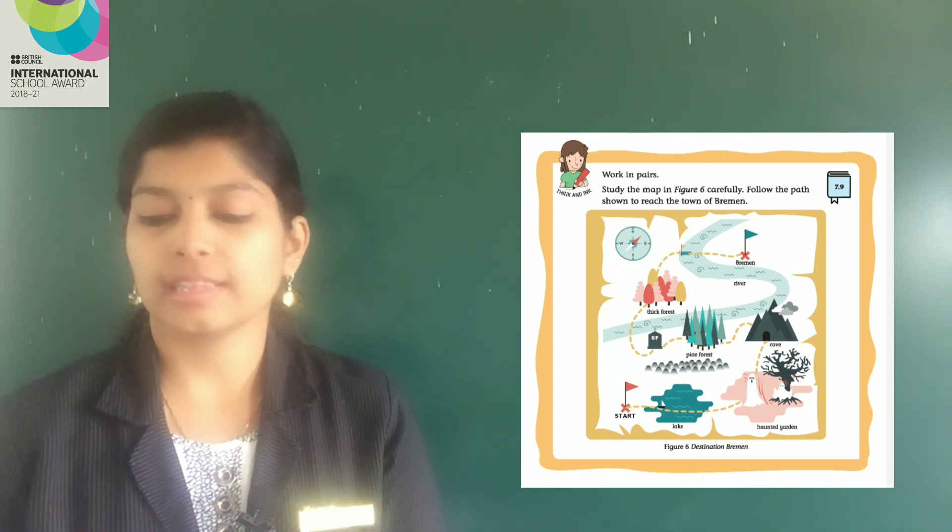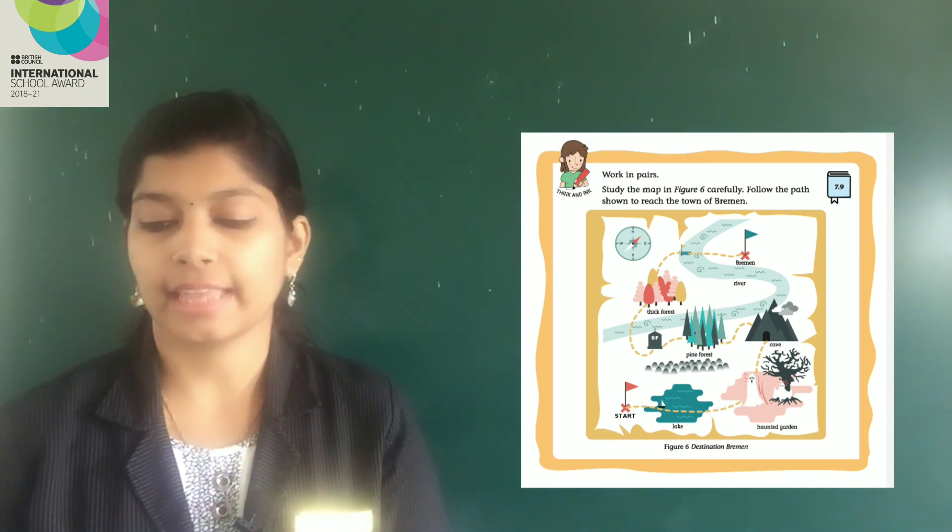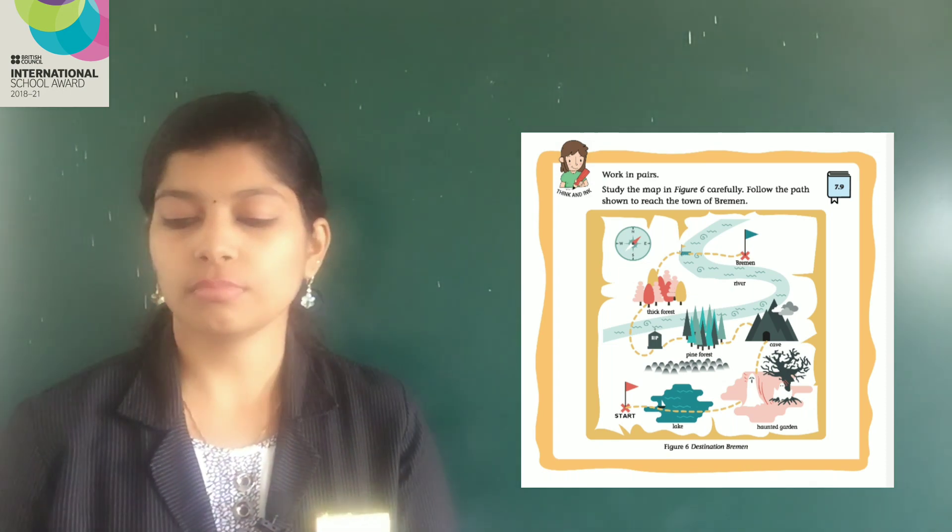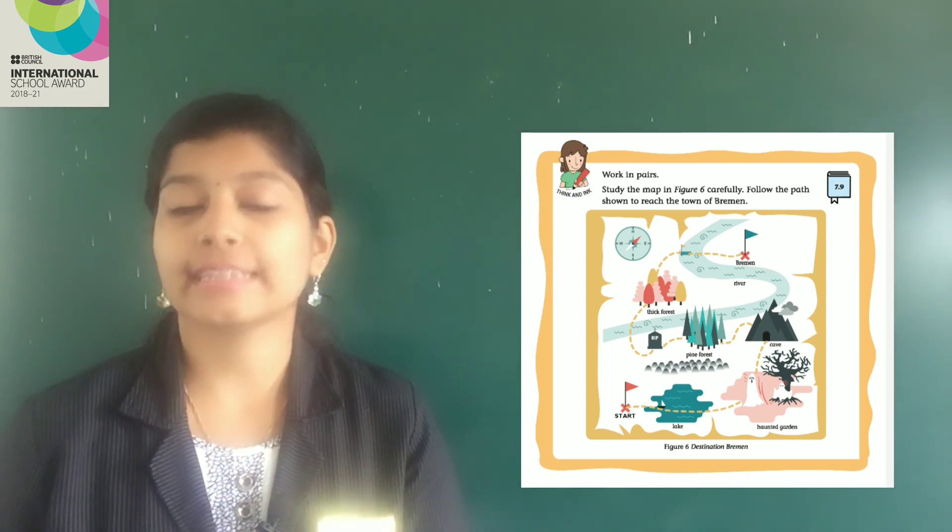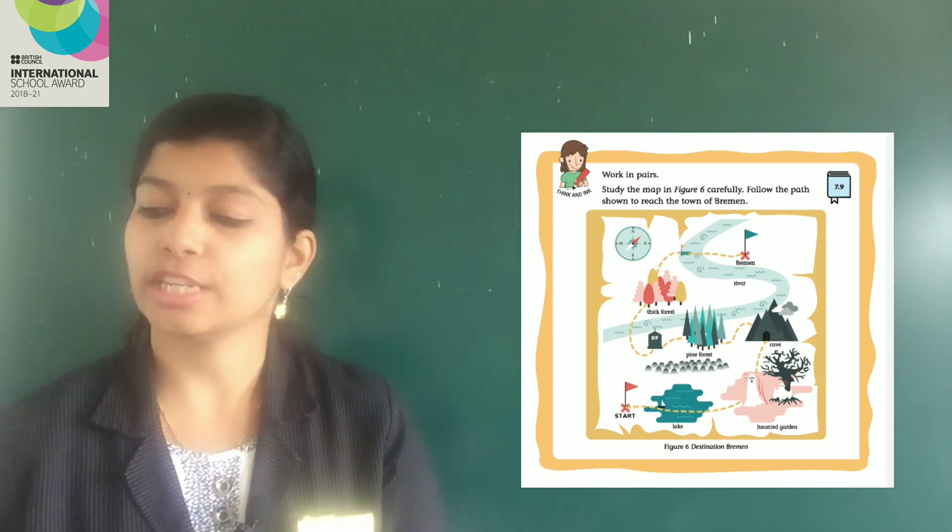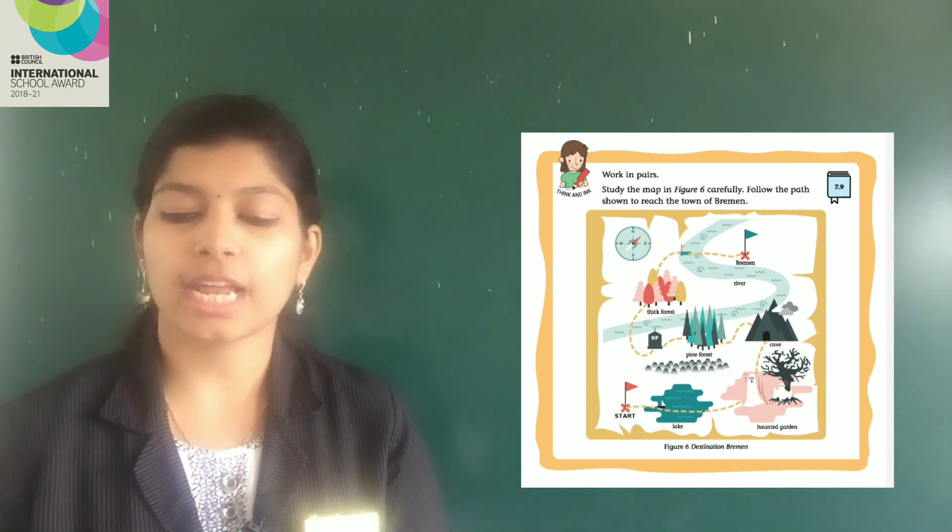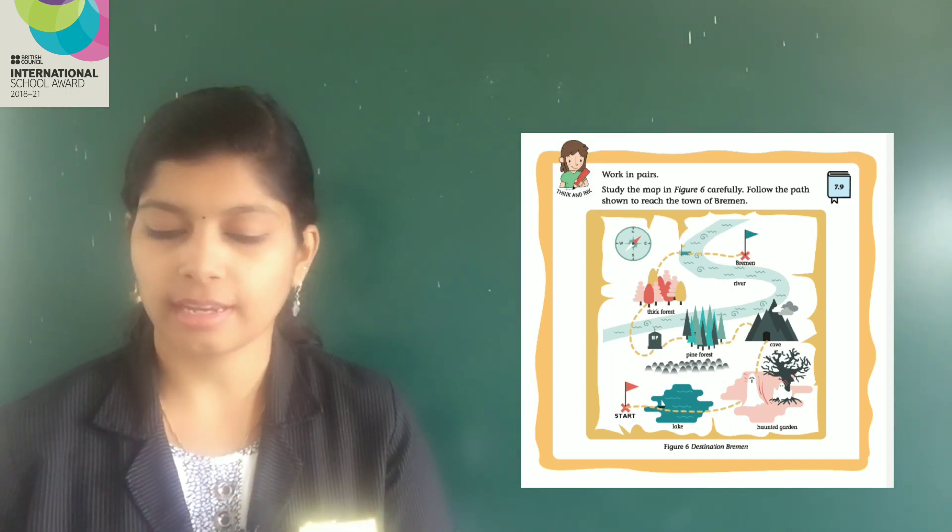Now, you have to look at the map carefully and then what you have to do? You have to write a description as a dialogue in your notebook. Include at least three exchanges between you and your partner.